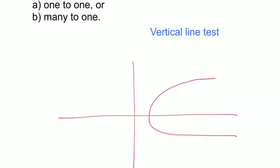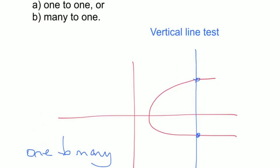For example, the one-to-many relation shown is not a function. First, because a function must be one-to-one or many-to-one. And second, it fails the vertical line test — drawing a vertical line passes through the graph twice, which is more than once, so therefore it is not a function.